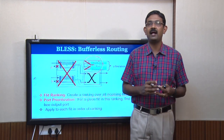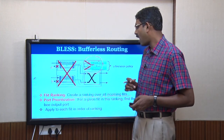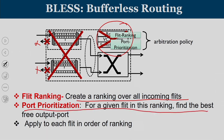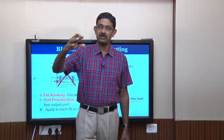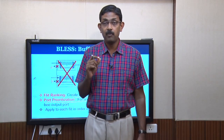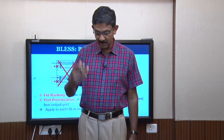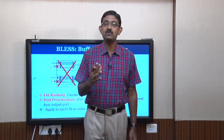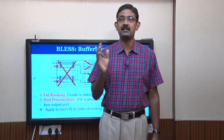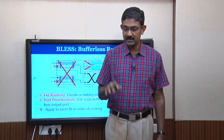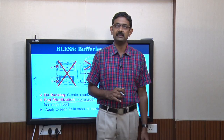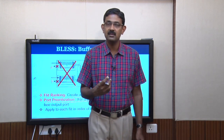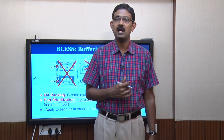After ordering the flits, the next step is port prioritization. For a given flit of a specific rank, we find the best free output port. There are two stages: first is flit ranking — rank the flits in order. Among all flits, pick the one with the highest rank and try to assign a port based on its preference. We are getting rid of buffers, the credit system, virtual channel allocation, and switch allocation. What we need is to rank flits and assign ports starting from the highest rank downward.